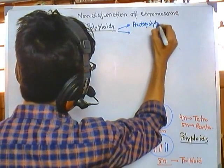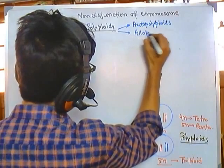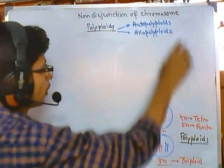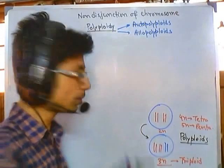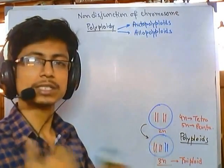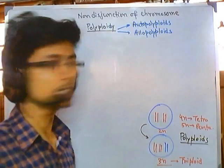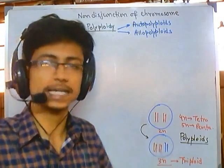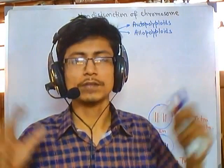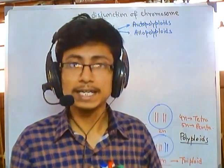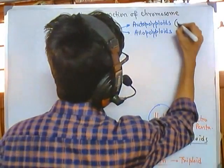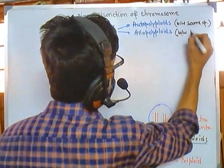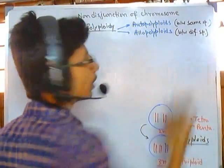The two types are autopolyploid and allopolyploid. In autopolyploid, the polyploid situation arises inside the cell due to non-disjunction during cell division within the same species. In allopolyploid, the increment of chromosome sets occurs due to the fusion of two different cells from two different species. So if non-disjunction occurs between the same species it is autopolyploid; if between different species, it is allopolyploid.